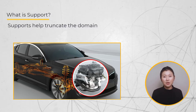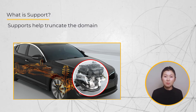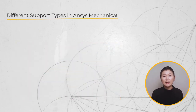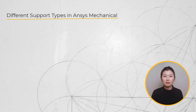For this engine block example, we can model only the engine block that is highlighted, but we also need to include the effect of the rest of the parts through the use of supports or boundary conditions. Let us now investigate the different support types available in ANSYS Mechanical and their meaning.